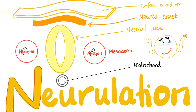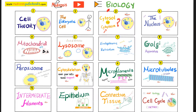What's up, guys? It's Medicosis Perfectioneros, where medicine makes perfect sense. We continue our biology playlist. In the previous videos, we talked about cleavage, blastulation, implantation, gastrulation, and today it's time to talk about neurulation — how your nervous system came to be. Just remember: the neural tube will give you the central nervous system and the neural crest will give you the peripheral nervous system. This is video number 28.